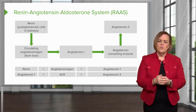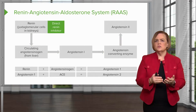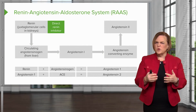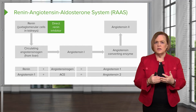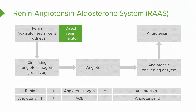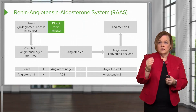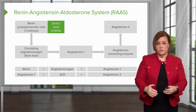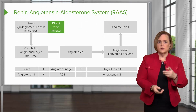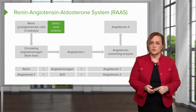What would happen if we used direct renin inhibitors? If we could make a drug that would inhibit renin, look at that — if I have less renin, I'm going to end up with less angiotensin 2, because there won't be as much renin available to connect with the circulating angiotensinogen. Therefore I have less of every other product downstream. So if I have less renin, I'll end up with less potent vasoconstriction and volume expansion.